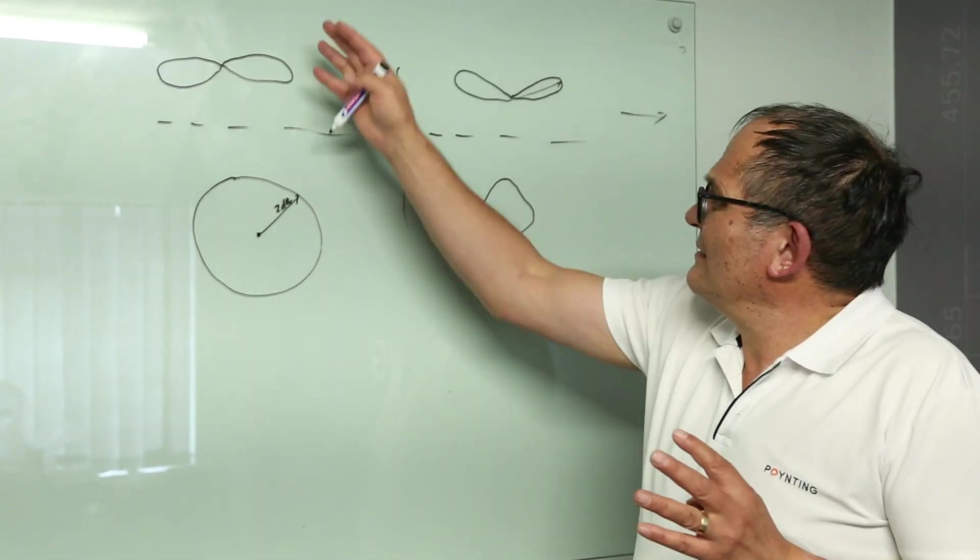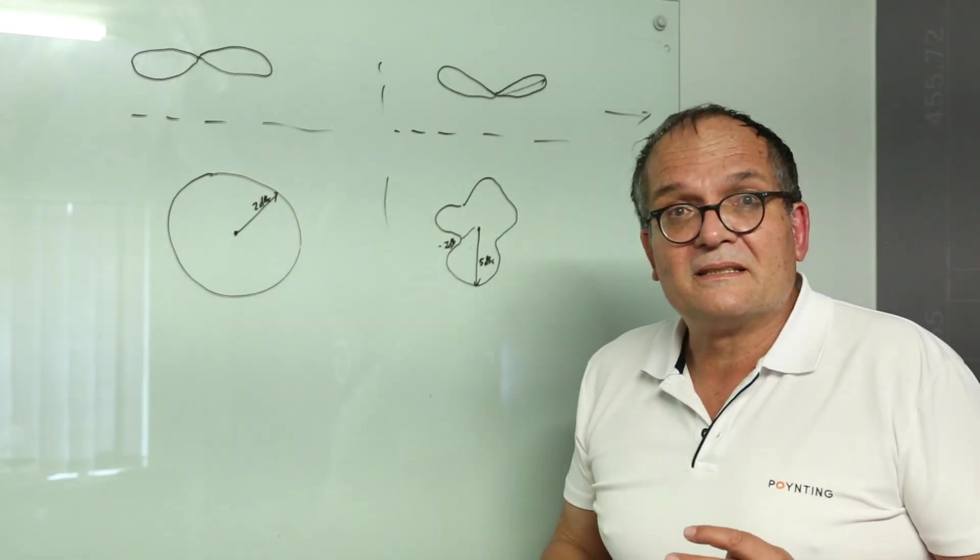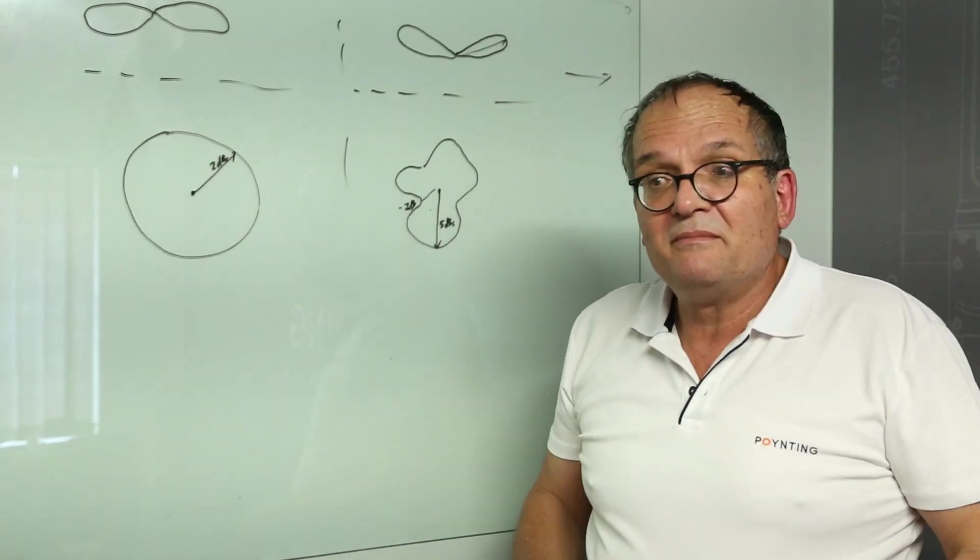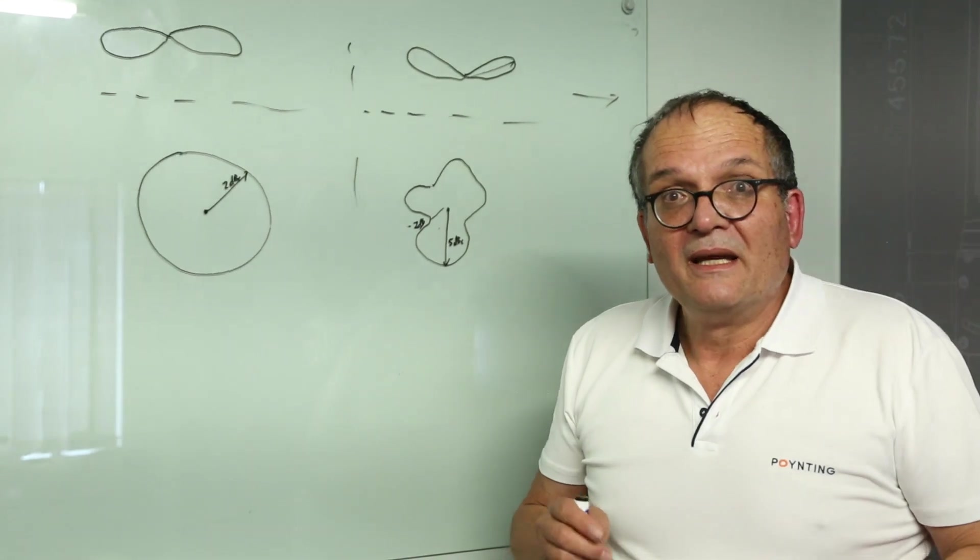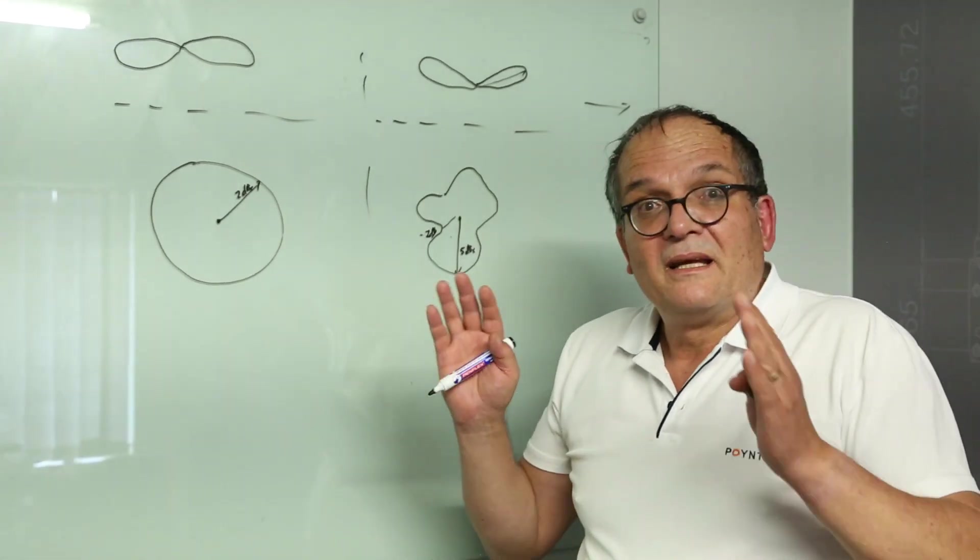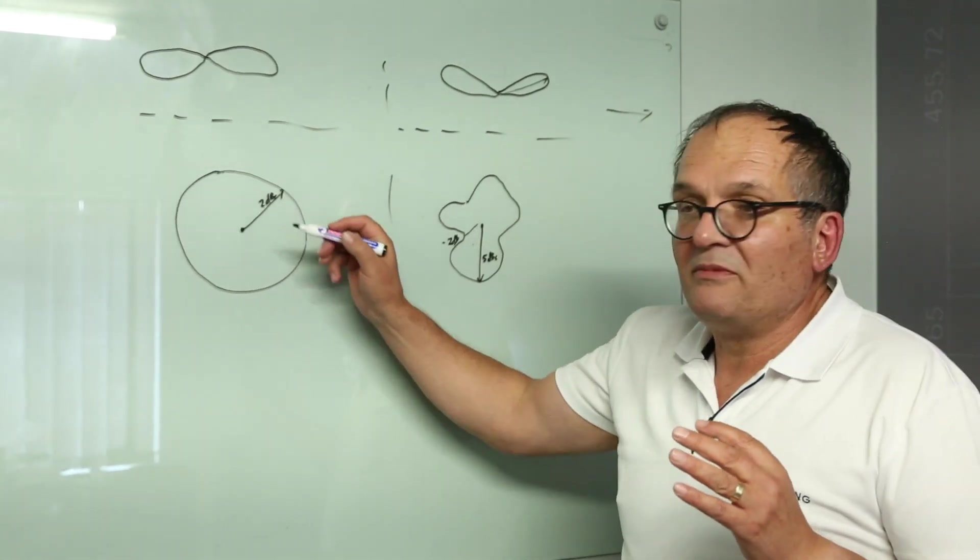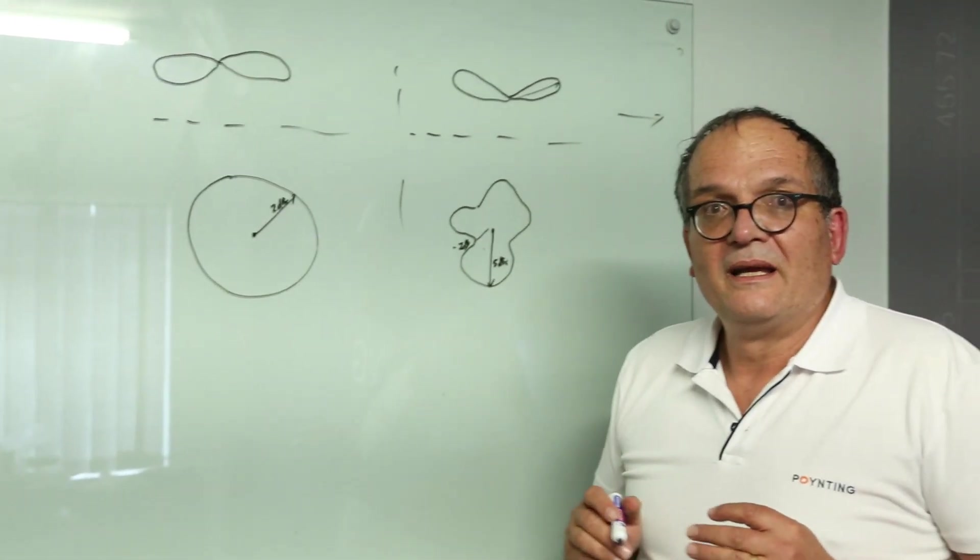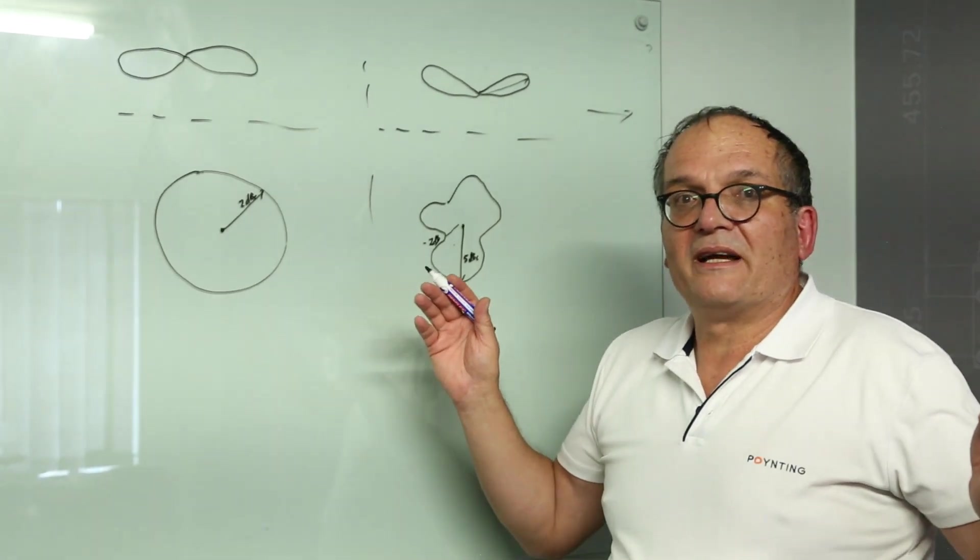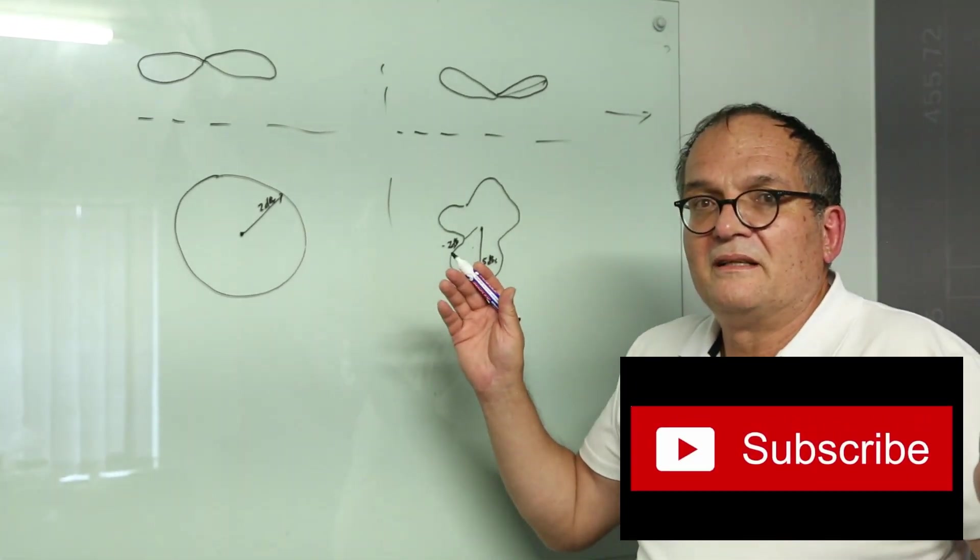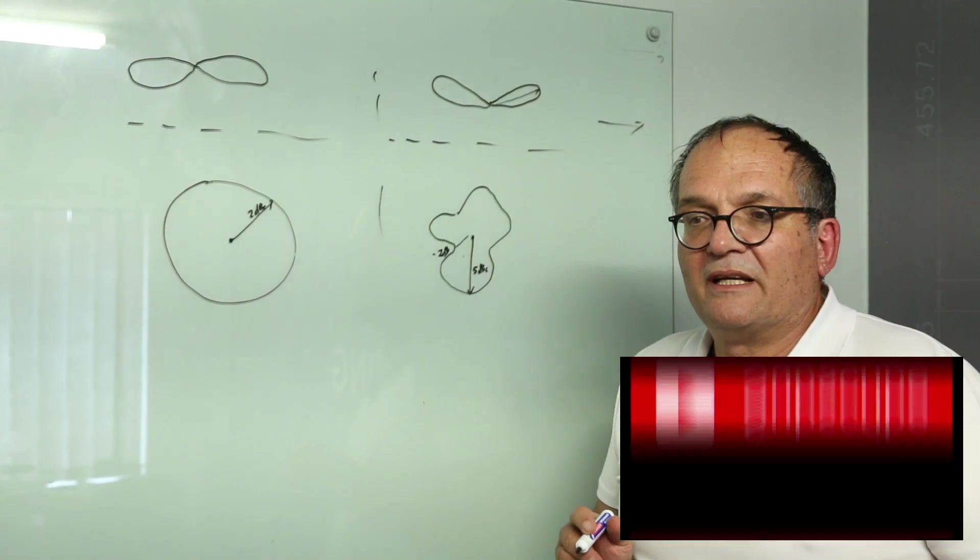But most people don't sit and read radiation patterns. Radiation patterns, to me, is like reading the Sunday paper. I see it immediately. But perhaps go look, or perhaps believe me, that on an omni antenna, the lower gain is the better. Can you believe it? So I get crucified for designing low gain antennas, which are in fact top performing antennas in the world today.